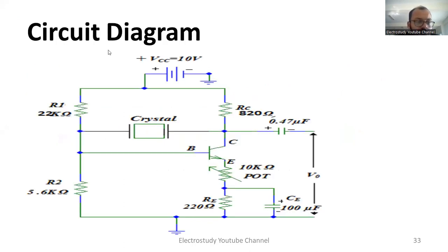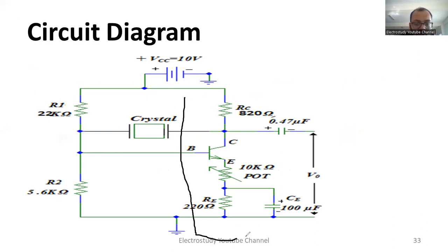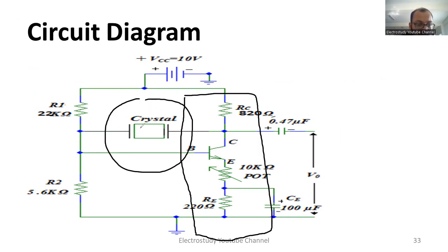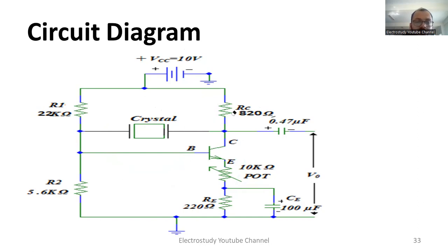As you can see, this is the circuit diagram of the crystal oscillator. The entire circuit comprises two segments: the first one is the common emitter amplifier, and then we have the crystal. These two major segments are present, and these two resistors are mainly for biasing. The expected output will be a sinusoidal waveform, and you need to determine the frequency and amplitude of that waveform.